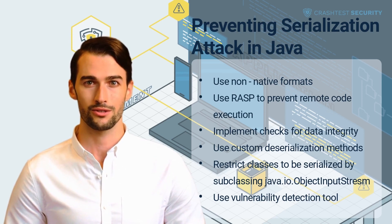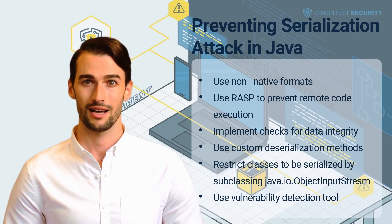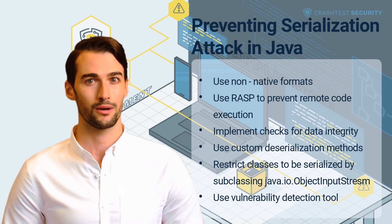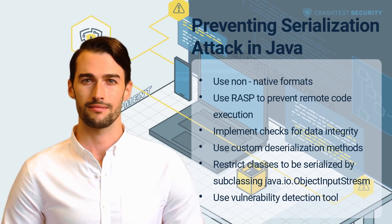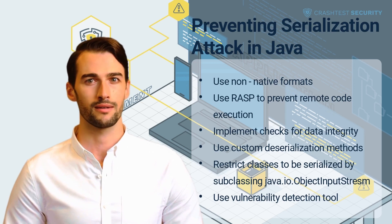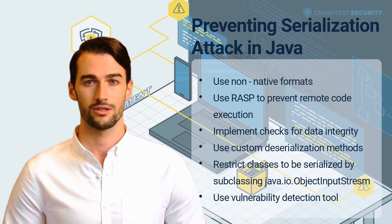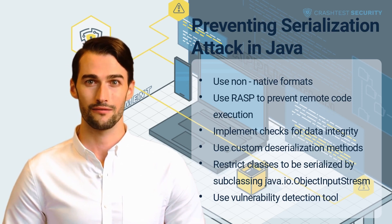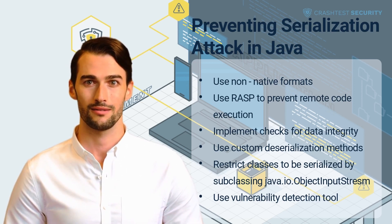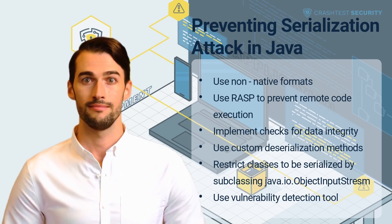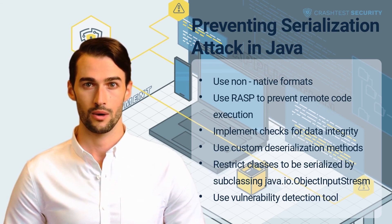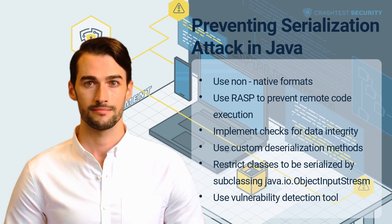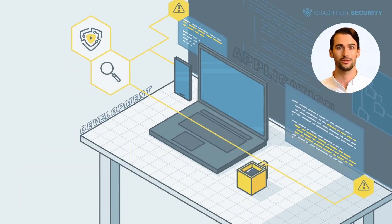Use a vulnerability detection tool: Deploy a security testing tool that identifies static and dynamic application vulnerabilities through continuous scanning and testing. The Crash Test Security Suite helps scan APIs and web applications to identify serialization vulnerabilities before attackers exploit them. Sign up for a free trial to begin a quick and efficient vulnerability scanning. Try Crash Test Security today to discover how it integrates into your development stack for efficient, automated vulnerability scanning. The trial is free.